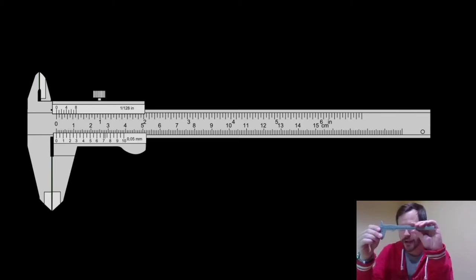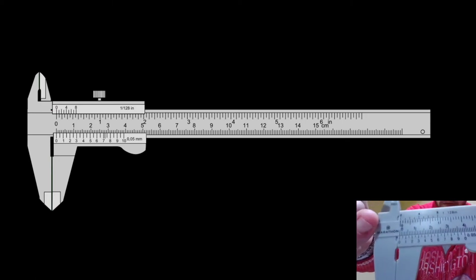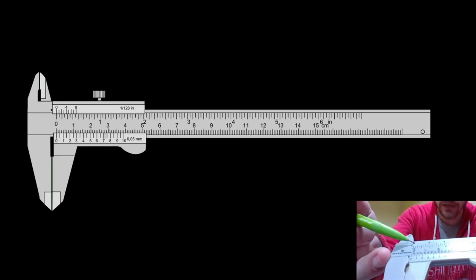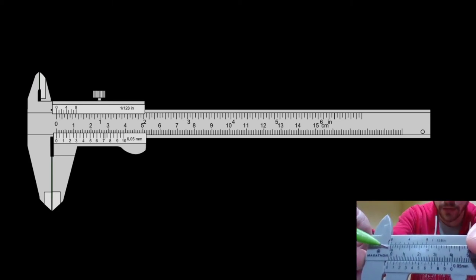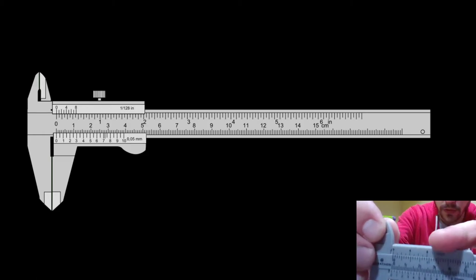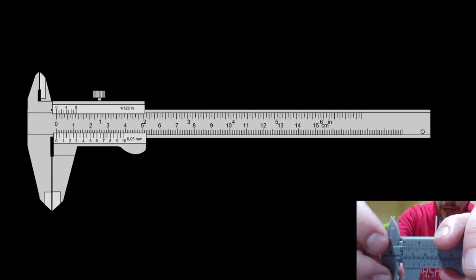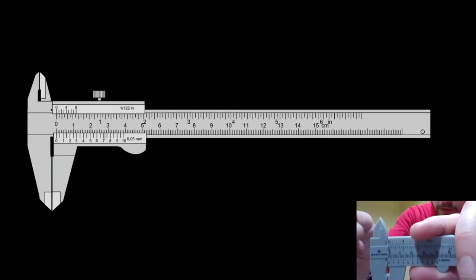So take your calipers, close them all the way, and then you're going to look at this zero line and that zero line and make sure that they are lined up perfectly, right? And not a little gap in between, like that.